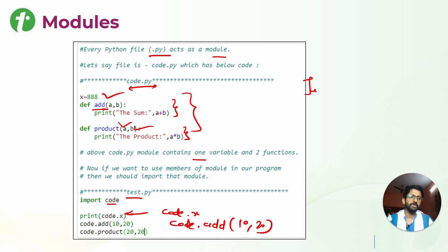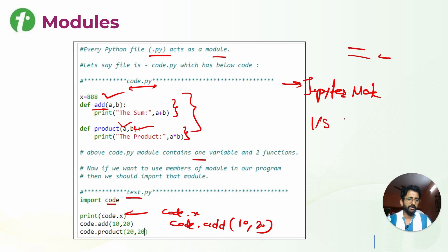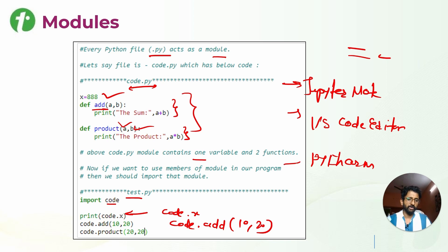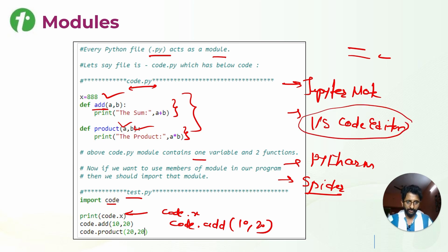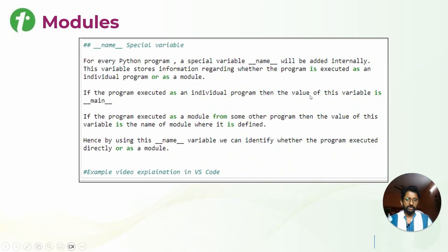We will see this in VS Code. Initially we have seen Jupyter Notebook where we can write one cell and execute. But there are many editors in Python - you can work with PyCharm, you can work with Spyder which is built inside Anaconda. Now I will be editing the code in VS Code and showing examples. But before that, what is this __name__ special magic method?